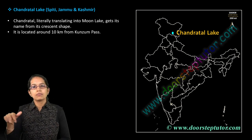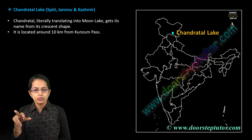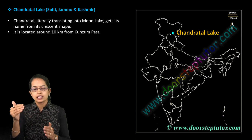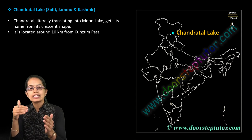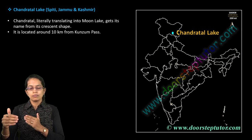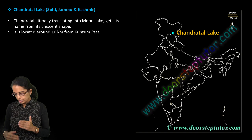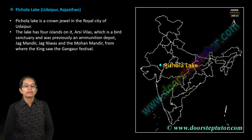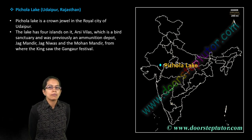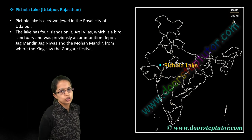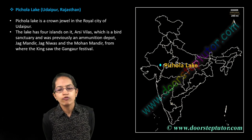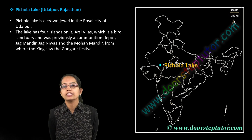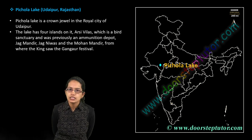Chandratal is crescent-shaped — named after the moon — and is located near the Kunzum Pass. It is a very important location.